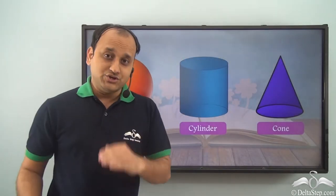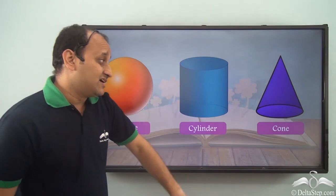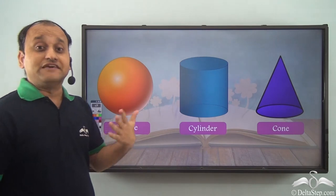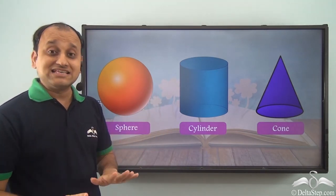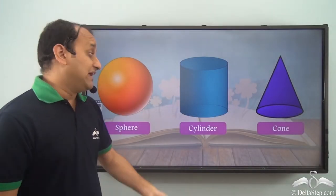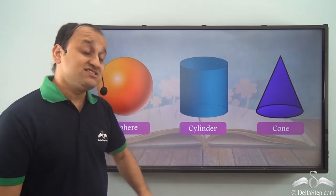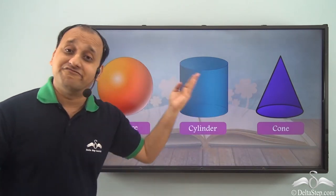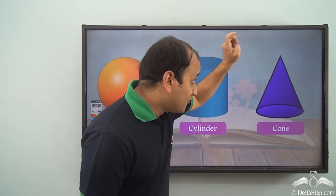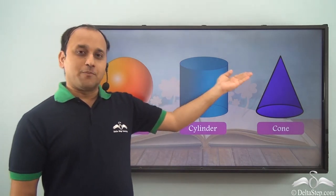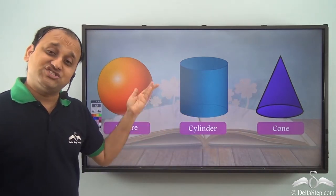Today we learned about sphere, cylinder, and cone and their properties. In the case of sphere, we have one surface with no edge and no vertex. In the case of cylinder, we have three surfaces, two edges, and no vertex. In the case of cone, it is a very unique shape — we have one vertex, two faces, and one edge. These are the properties of these three shapes.